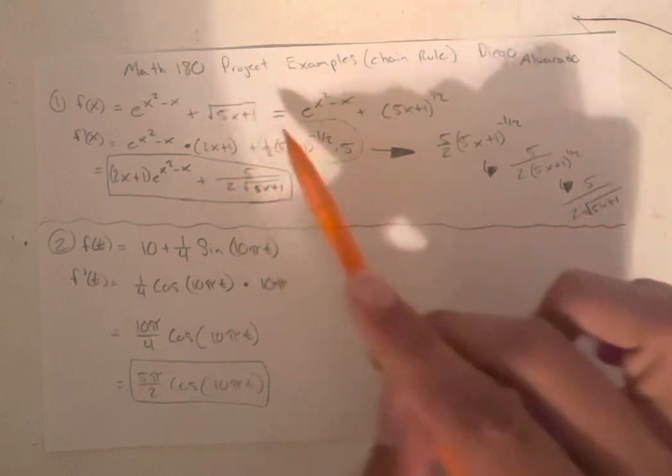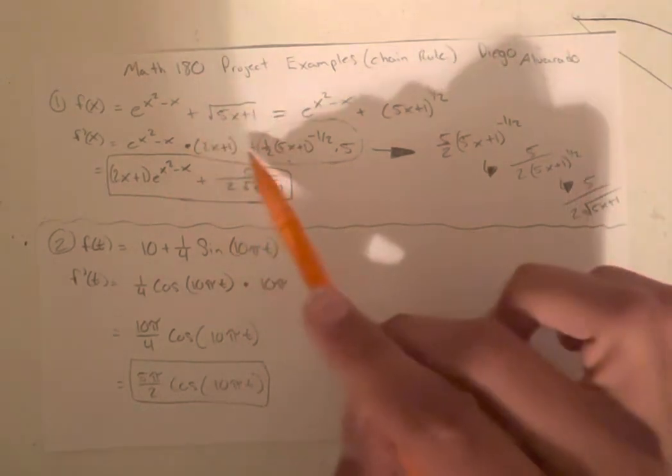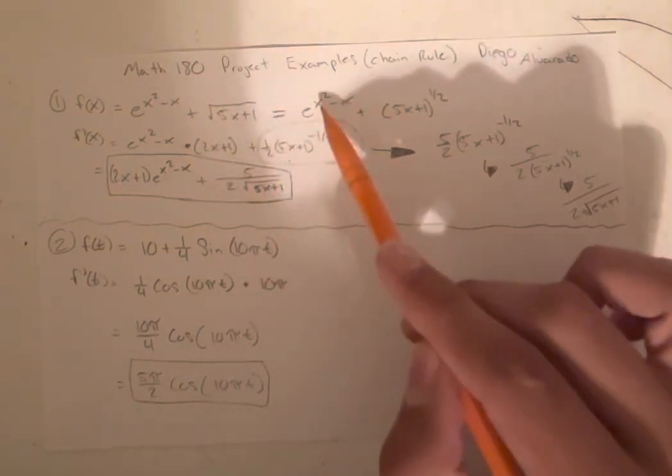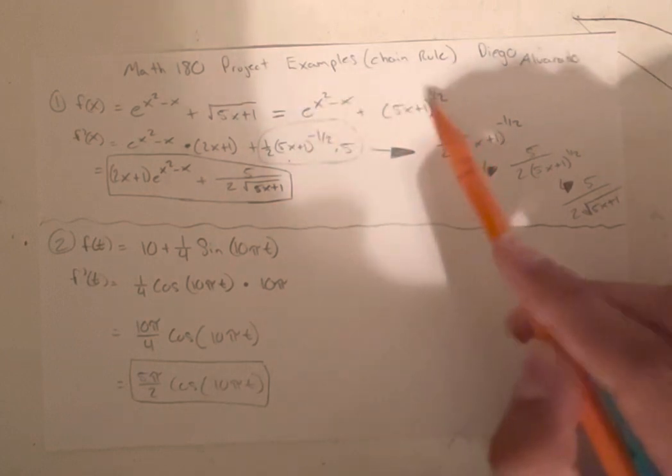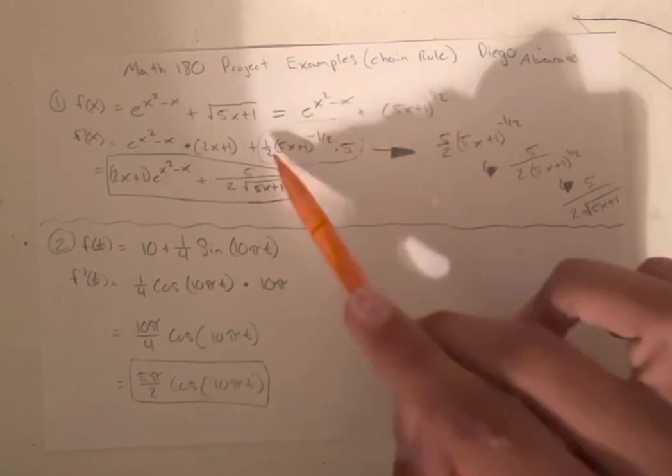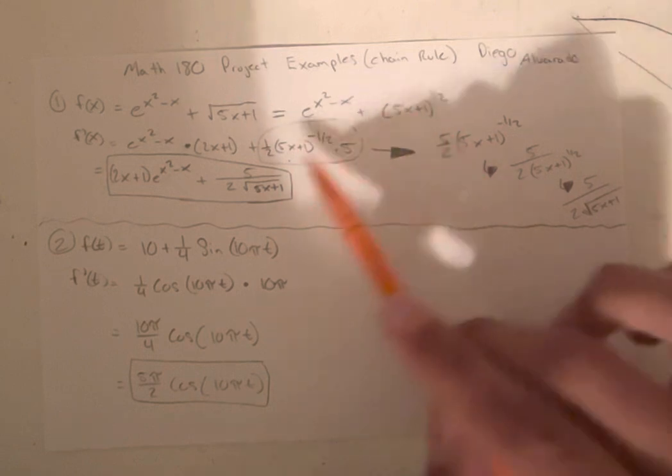Now we have to find the derivative of this. So we get plus one half, because we bring down the power from up here. So we bring this power down, it gets one half, 5x plus 1 stays the same.